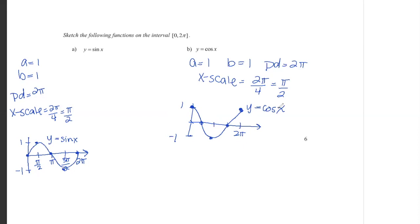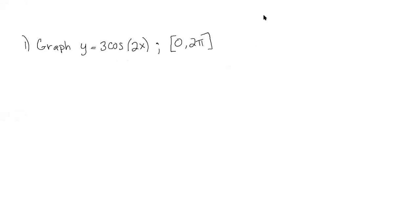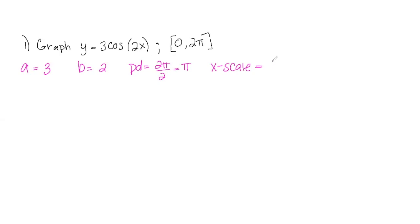These are our parent functions that we're going to practice shifting in the next examples. This first example does not have a phase shift or a vertical shift, so I just need to find a, b, the period, and the x-scale. My amplitude a is three, and b — the frequency, the number in front of x — is two. The period is two pi over b, so two pi over two is pi. My x-scale is the period over four, so pi over four. I'm graphing from zero to two pi, and based on my amplitude I label my y-axis up to positive three and down to negative three.